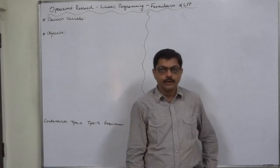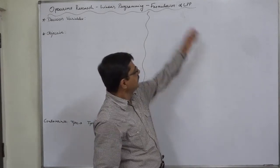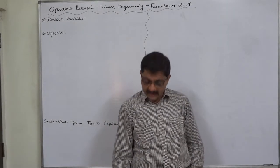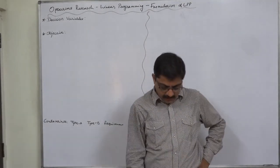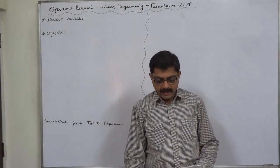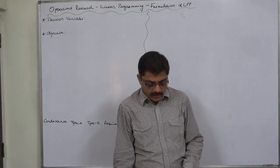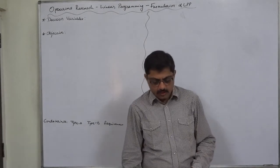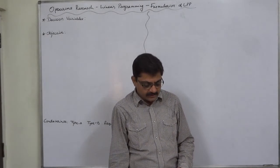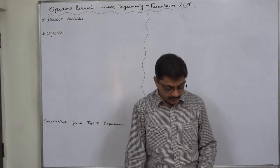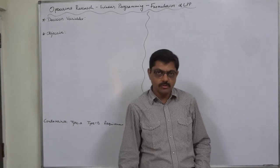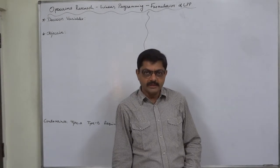Hello and welcome. A new case in formulation of a linear programming problem. The subject is operations research. A company has two types of quality control inspectors: Type A and Type B, to be assigned a quality control inspection task. It is required that at least 2000 pieces be inspected per eight-hour day — meaning 2000 or more units are to be inspected.